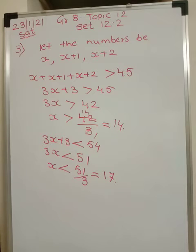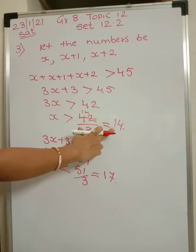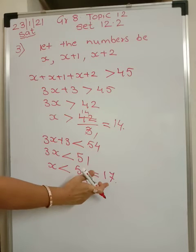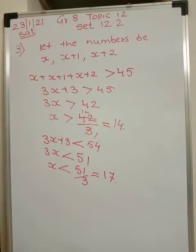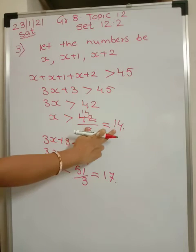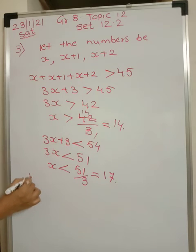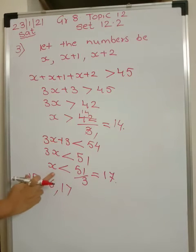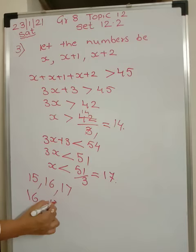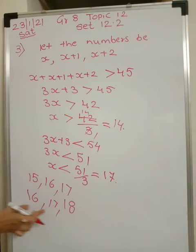So x should be greater than 14 and less than 17. That means x can be 15 or 16. If x is 15, the three consecutive numbers are 15, 16, 17. If x is 16, the three consecutive numbers are 16, 17, 18. So either it will be this set of three or the other set.